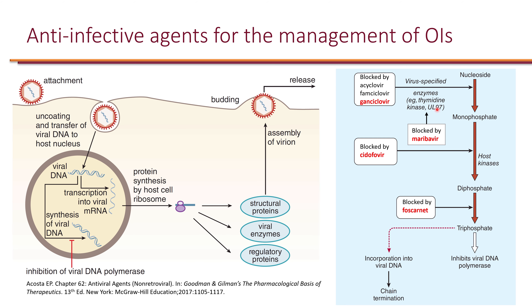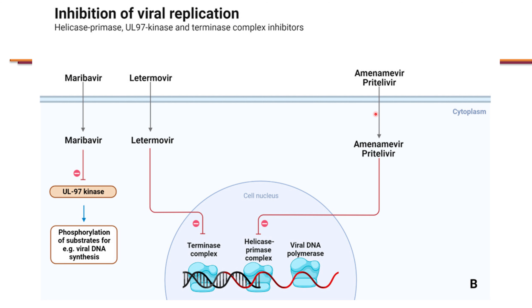Maribavir blocks UL97, which is required for phosphorylation of nucleotides needed for DNA synthesis. Importantly, UL97 is also required for ganciclovir to work, so combining maribavir with ganciclovir is contraindicated — maribavir would prevent ganciclovir from being activated. Letermovir, once inside the cell, enters the nucleus and inhibits the terminase complex needed for DNA replication, which is mechanistically distinct from maribavir.